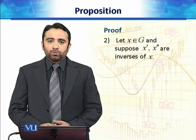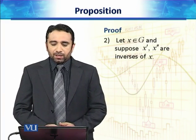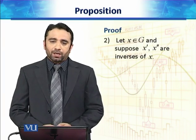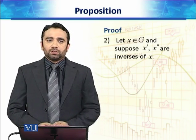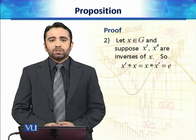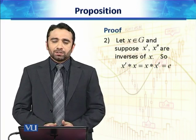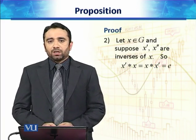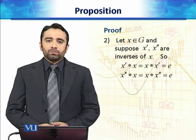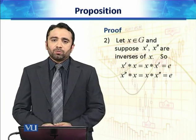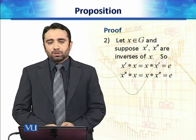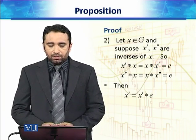For the second part of the proof, we suppose that X' and X'' are inverses of X. That is, there is an element X which has two different inverses which are X' and X''. If X' is the inverse, it means X' star X is equal to X star X' is equal to identity element. And on the other hand, if X'' is the inverse, then X'' star X is equal to X star X'' is equal to E.